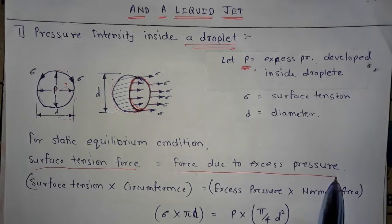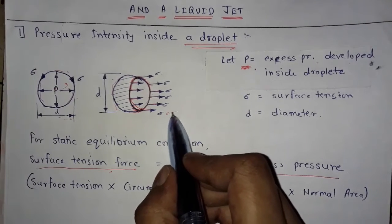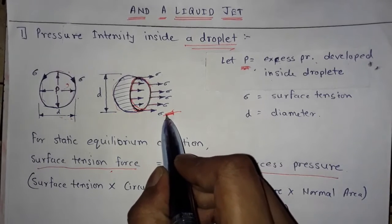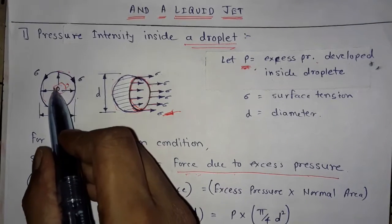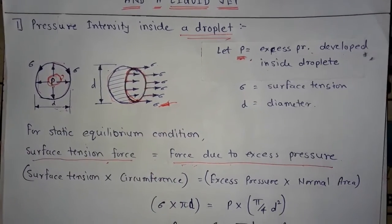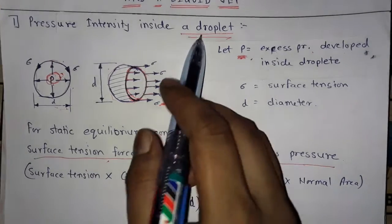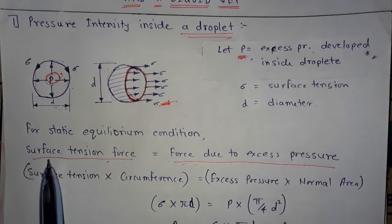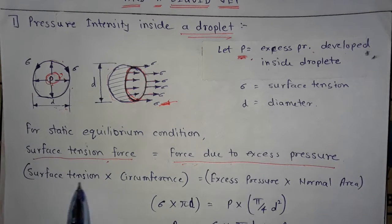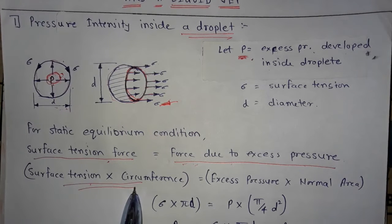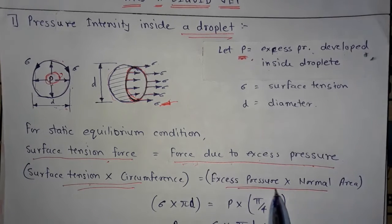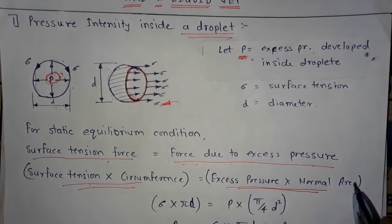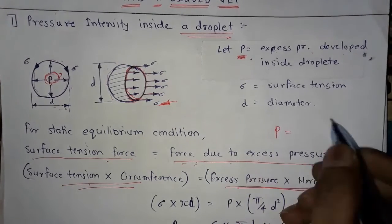Surface tension force means the force due to surface tension, and force due to excess pressure means the force due to the internal pressure. In the droplet case, surface tension force is given by surface tension multiplied by circumference, and force due to excess pressure is given by excess pressure multiplied by the normal area — since pressure equals force divided by area.